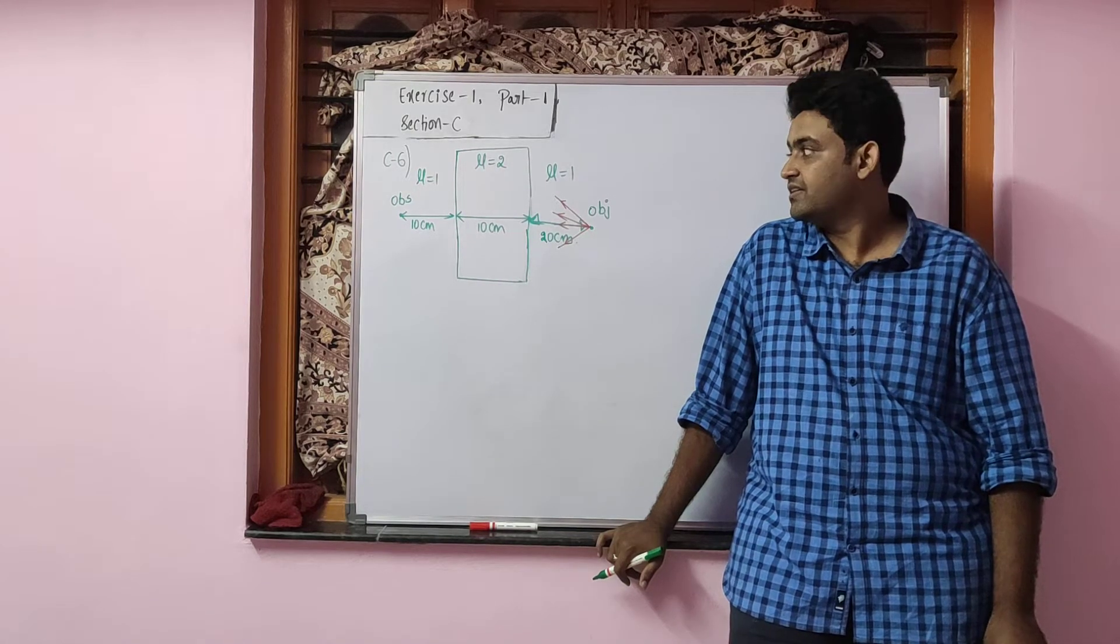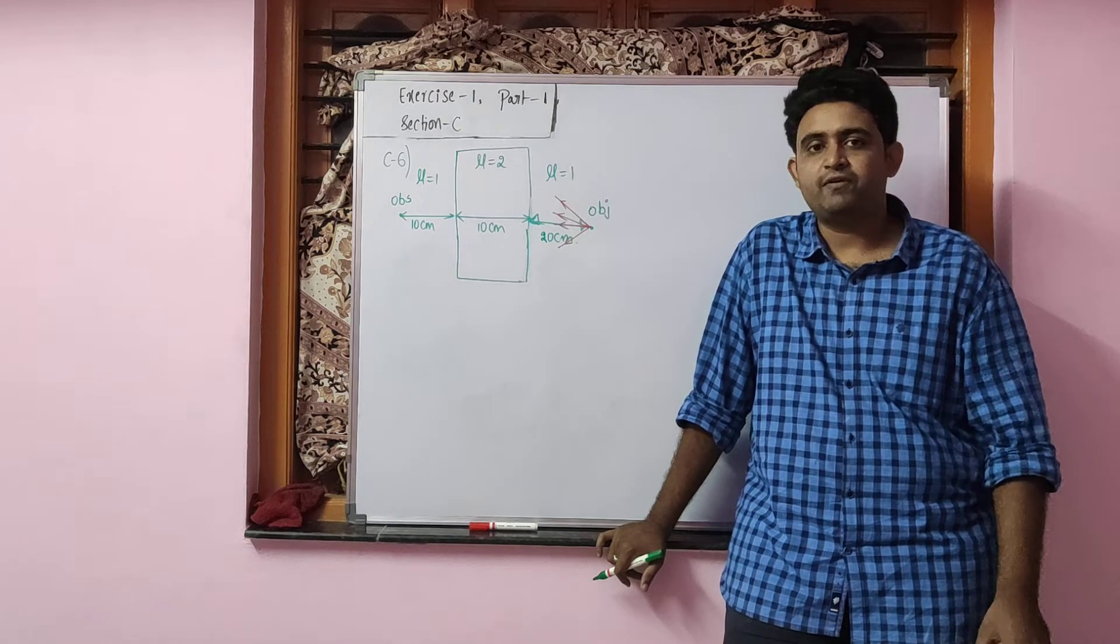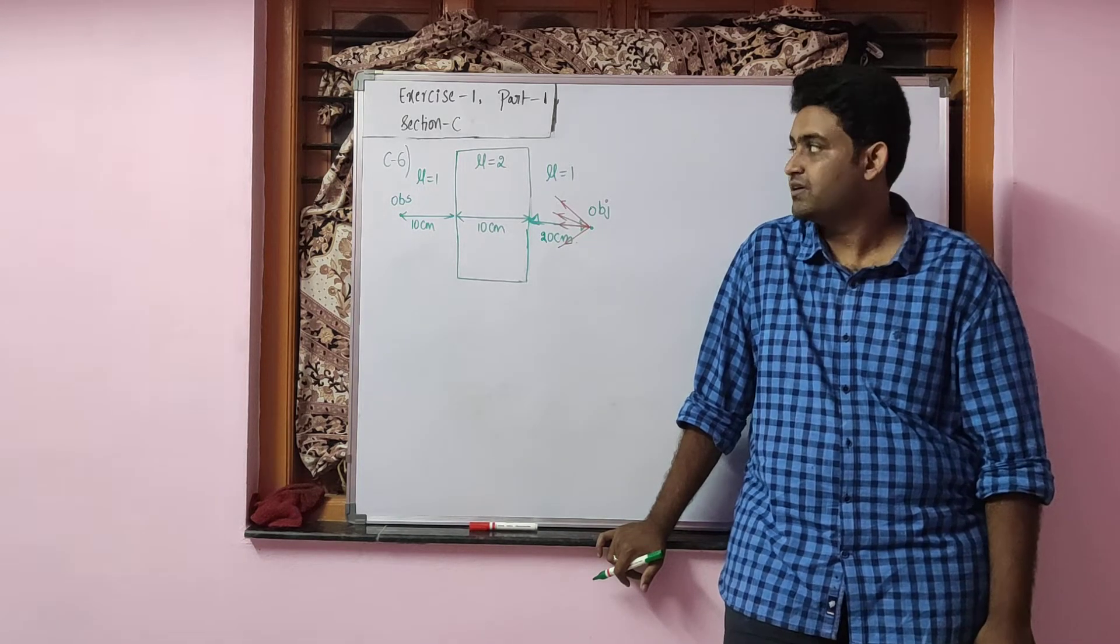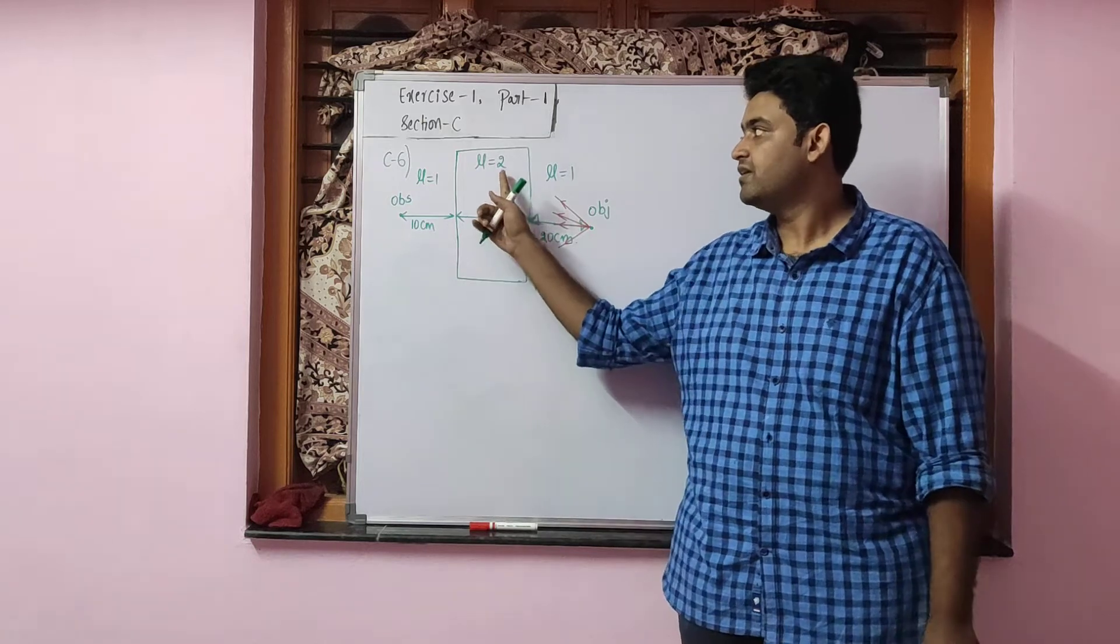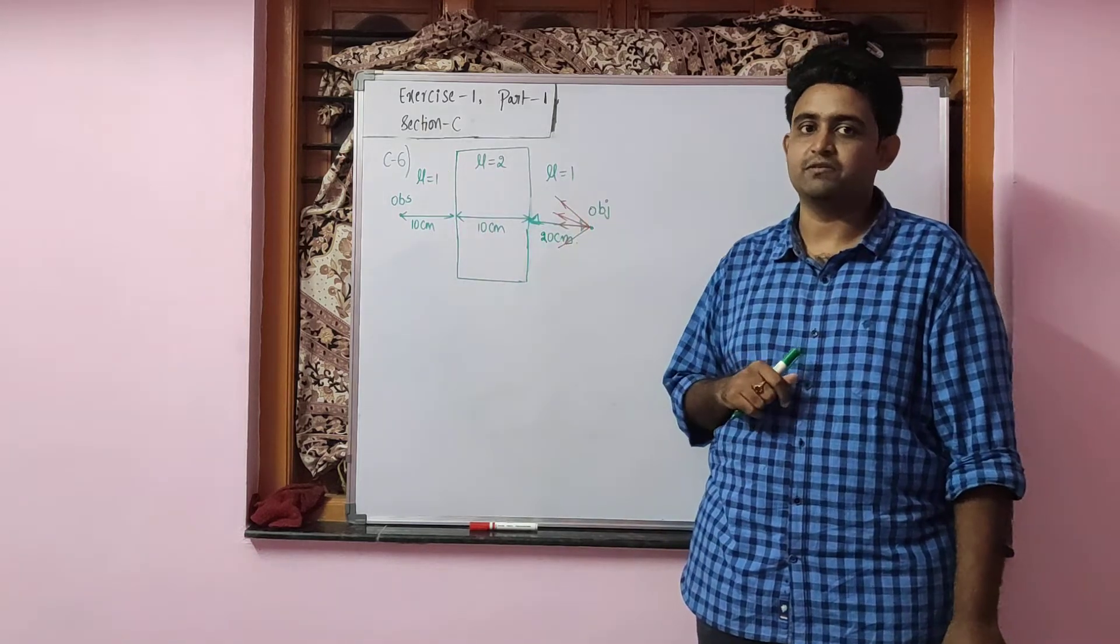This is a question regarding the normal shift produced by a parallel slab. We know the formula T into 1 minus 1 by mu. Here you can observe that the refractive index of the glass is greater than the refractive index of the surroundings.